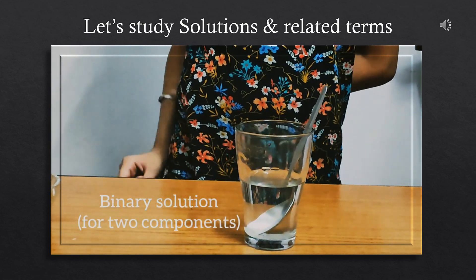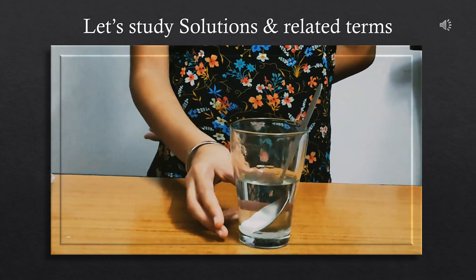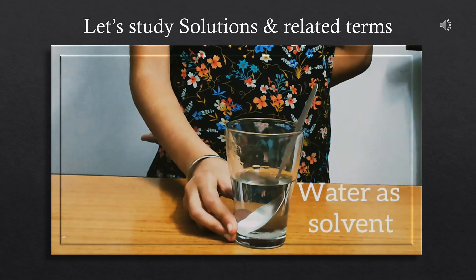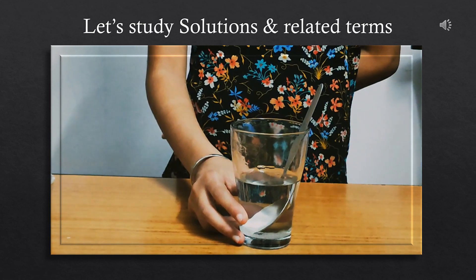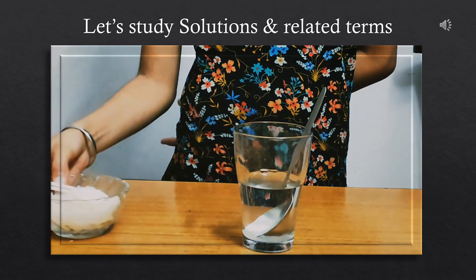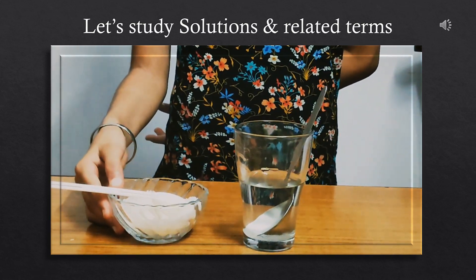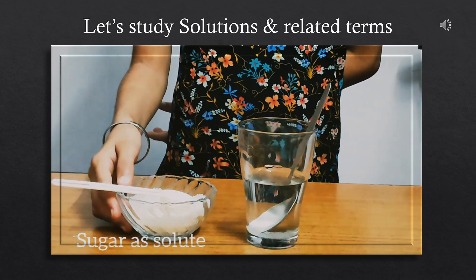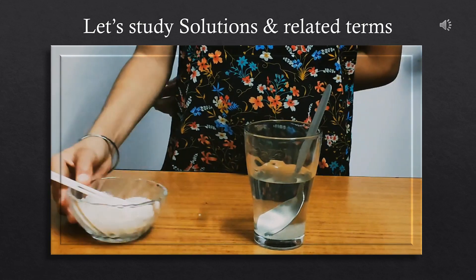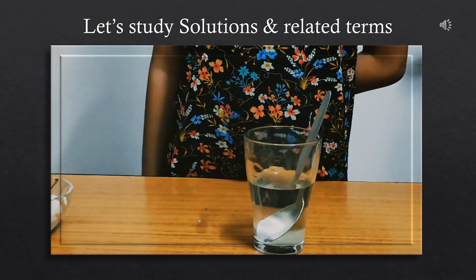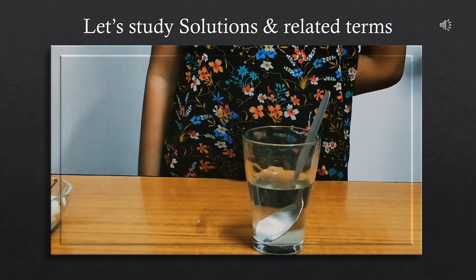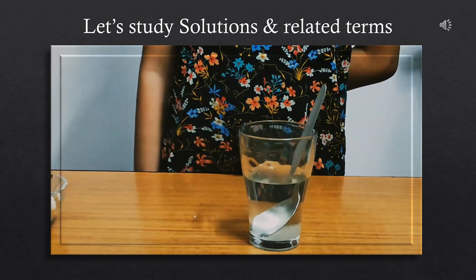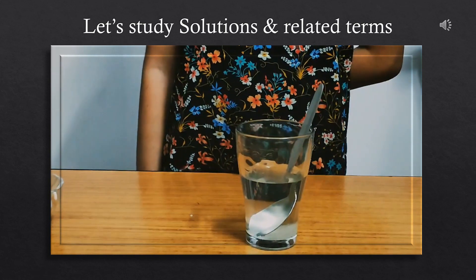The component which is present in large quantity is called solvent — here water is the solvent. The component present in lesser quantity is called solute — here it is sugar. The solution in which water acts as solvent is called aqueous solution, and when the solvent is other than water, it is called non-aqueous solution.